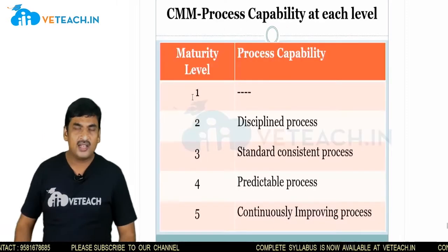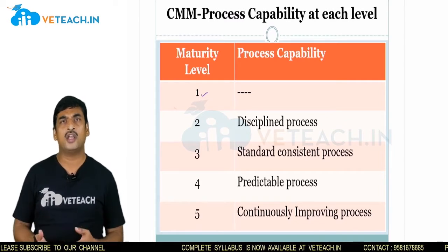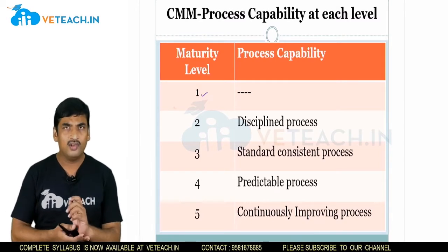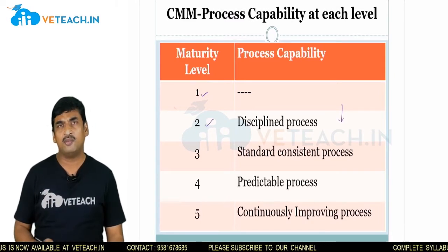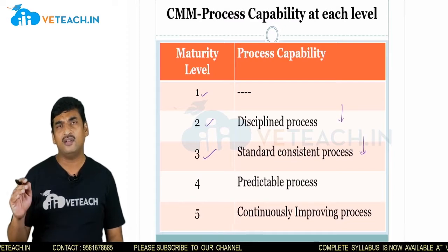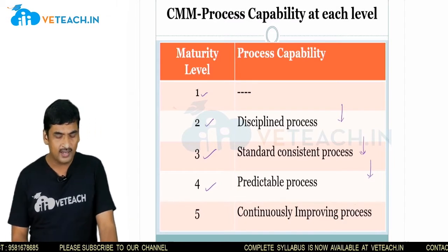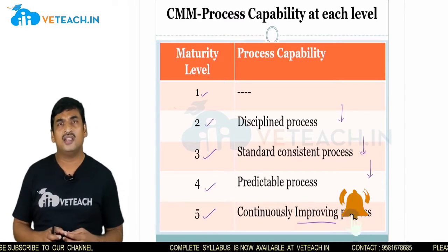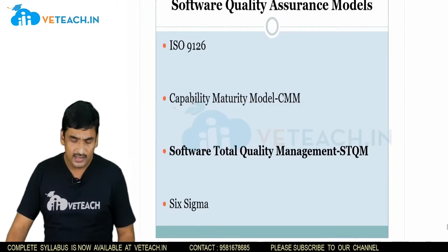At level one, the process is very chaotic and confusing — like a newly started organization with no discipline or standards. At level two, a disciplined process of developing the product is established. At level three, these disciplined processes are standardized for a consistent development approach. At level four, quantified measures are introduced so the process is predictable. At level five, the process is continuously improved — that is the Capability Maturity Model.